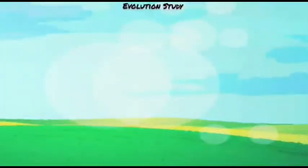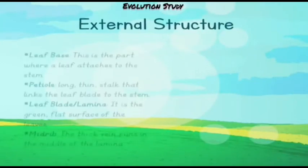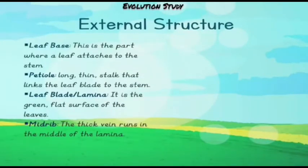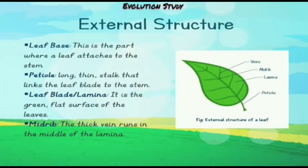Let's talk about the external structure of the leaf. The leaf base is the first part where a leaf attaches to the stem. Next comes the petiole — it is a long thin stalk that links the leaf blade to the stem. The third part is the leaf blade or the lamina, which is the green flat surface of the leaf.